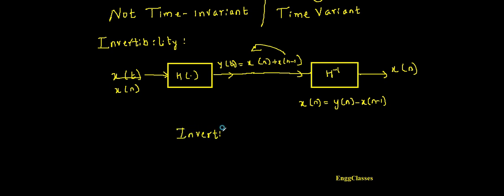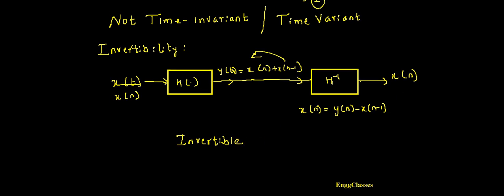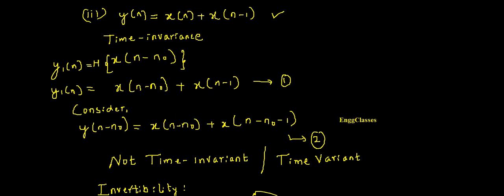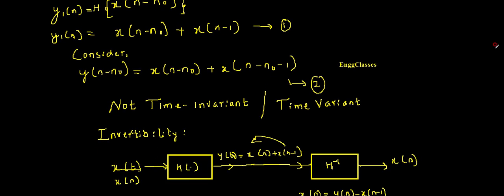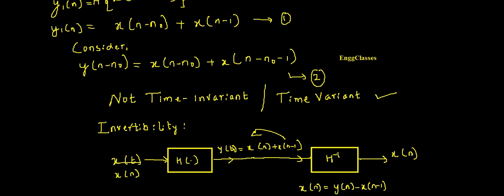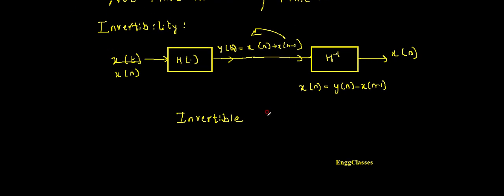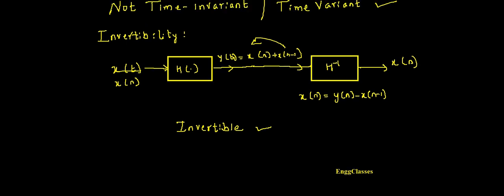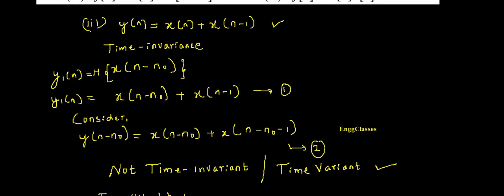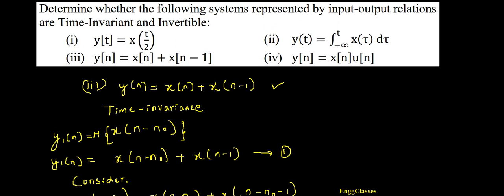Therefore the answer is: the system is invertible. To summarize: for time invariance, the answer is the system is time invariant; and to check for invertibility, the system is invertible. If there are any doubts, please let me know in the comment section and I will answer them. The fourth numerical will be considered in the next video lecture. Thank you so much for watching.